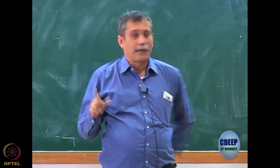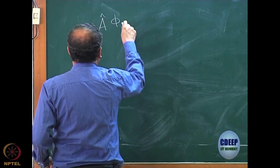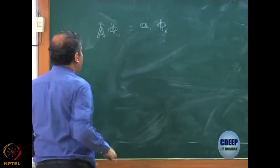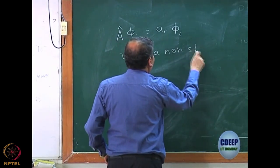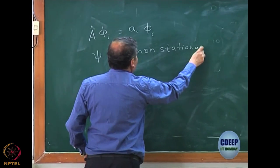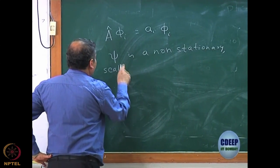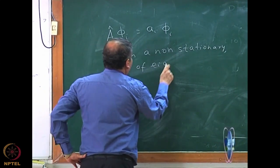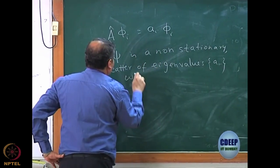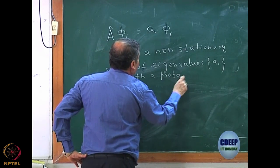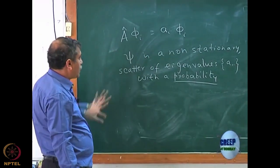You will always get an eigenvalue of the operator. If I have eigenvalues of the operator which are a_i and the eigenfunctions are φ_i, but if ψ is a non-stationary state, I will not get a specific a_i, but I will get a scatter of eigenvalues as a measurement a_i with a probability which can actually be defined — once I know the ψ. I will tell you how to define that probability.